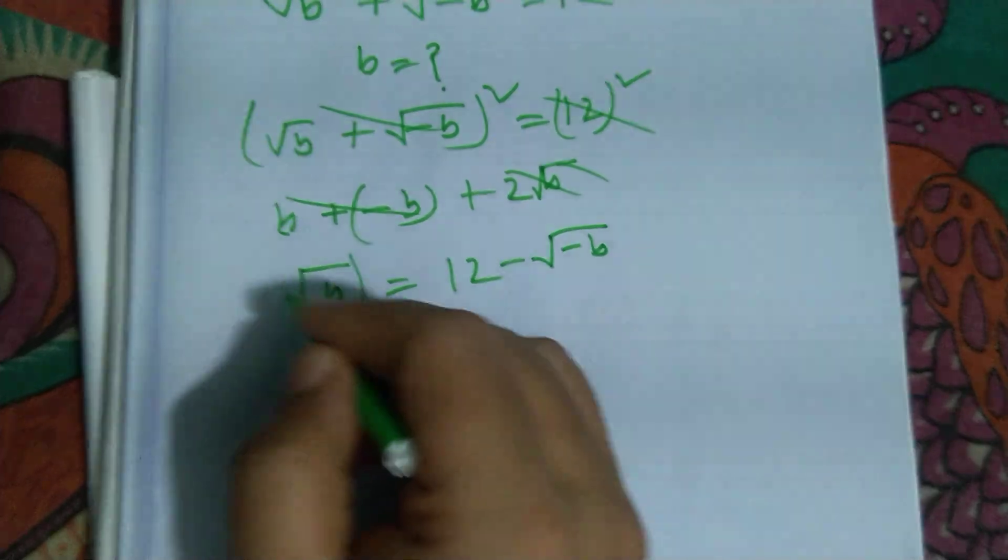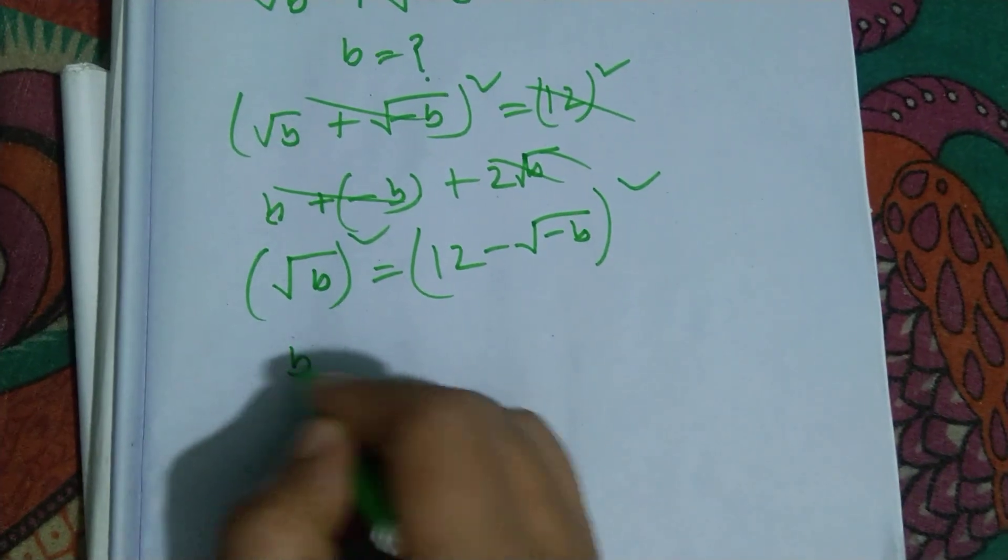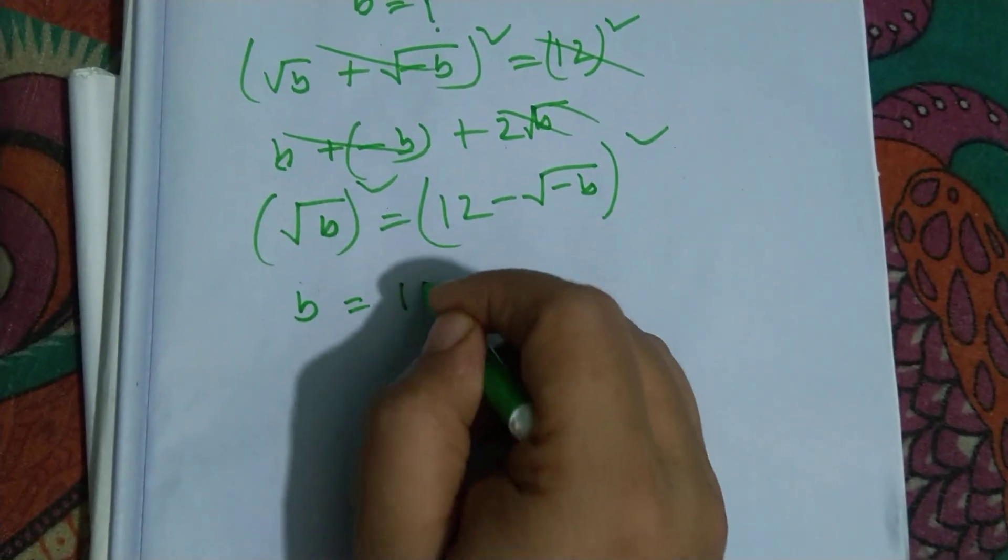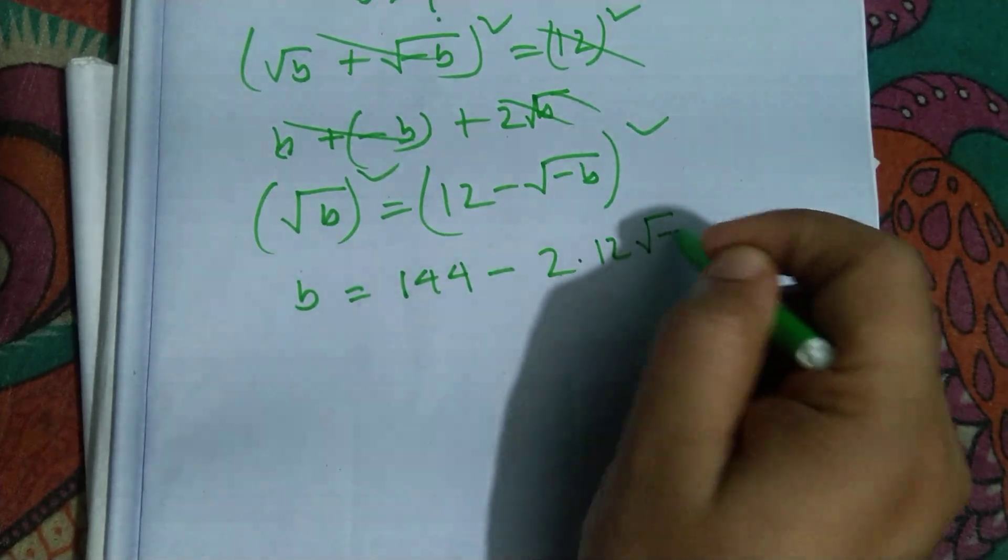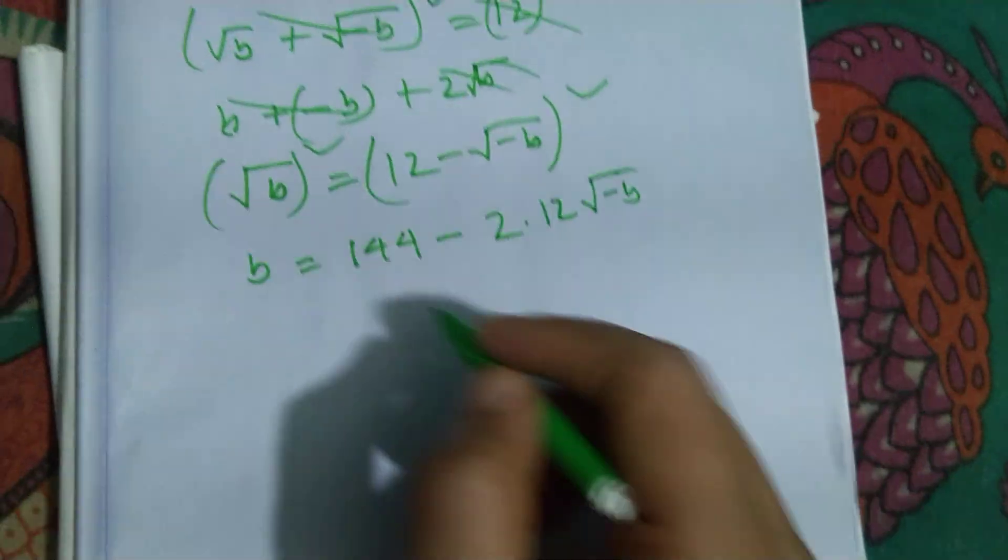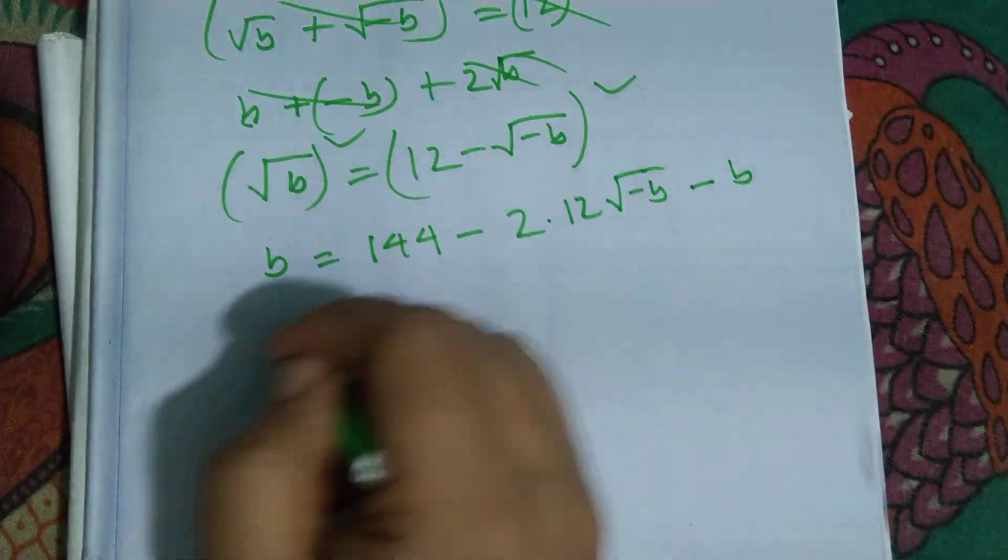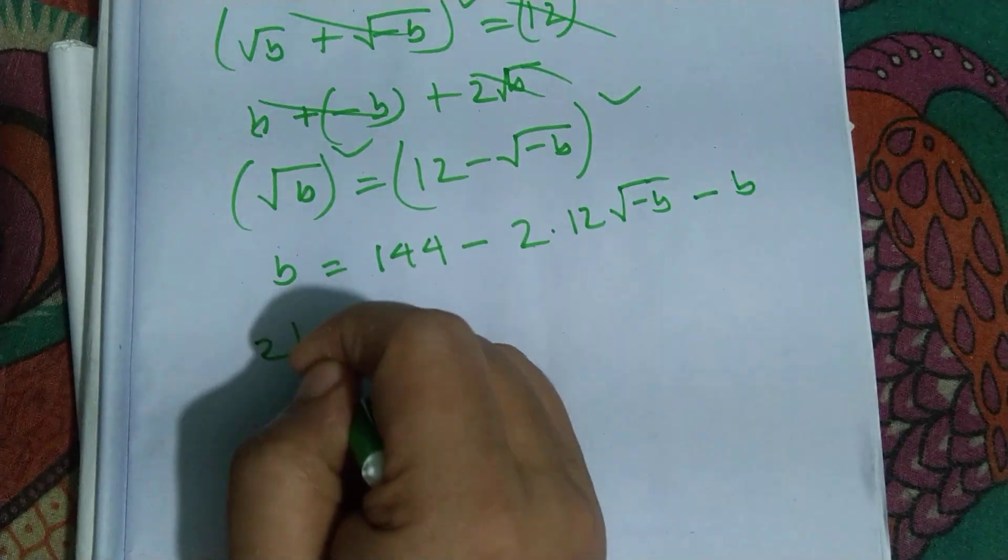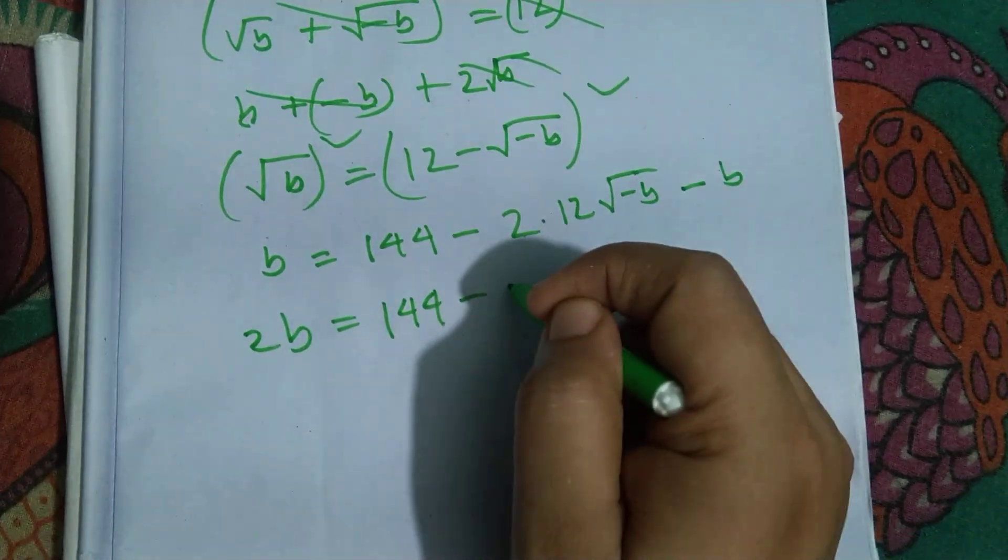Squaring both sides, so it is B equals to 144 minus 2 into 12 into root over minus B, root over minus B, and minus B. So it is 2B equal to 144 minus 24 root over minus B.